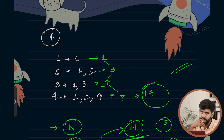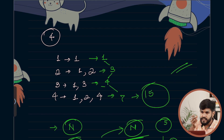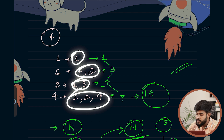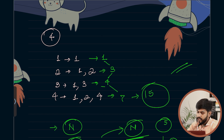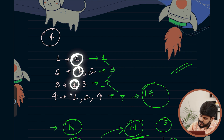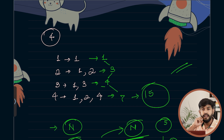We can use a technique known as the contribution technique, common in competitive programming. Instead of finding divisors individually, we look at the contribution of each number to the final sum. For example, 1 contributes to everyone as a divisor. 2 contributes to all even numbers. 3 contributes to 3, 6, 9, 12, and so on.